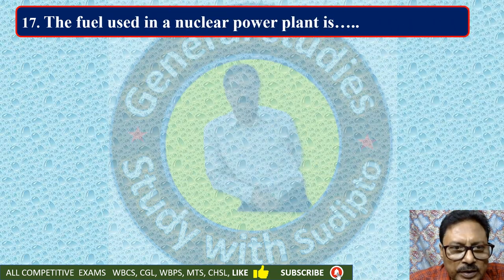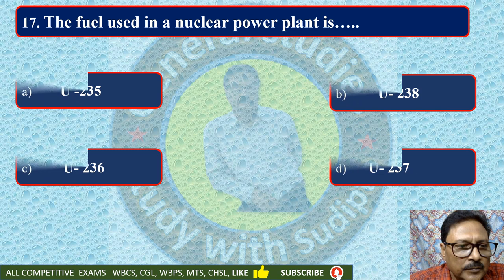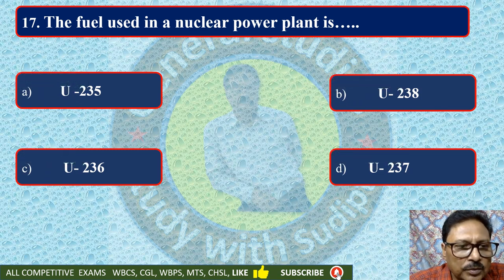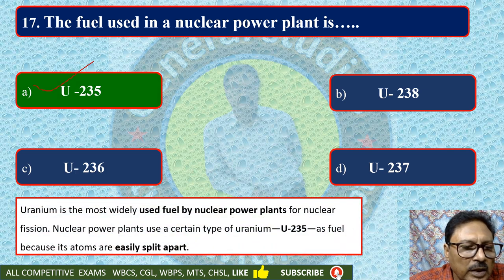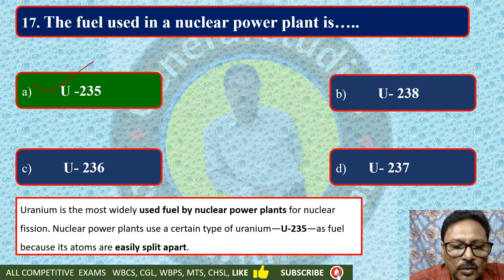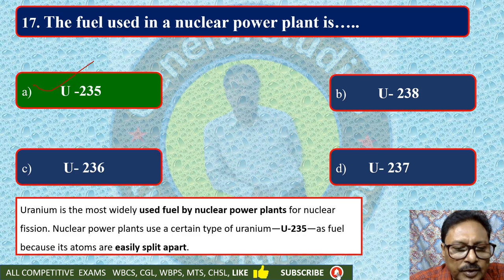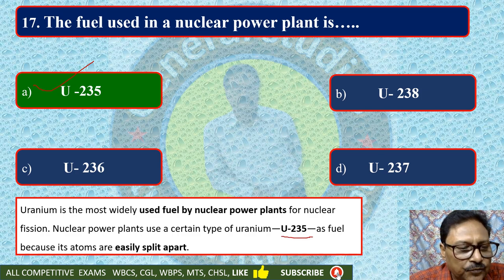The fuel used in a nuclear power plant is — uranium-235, uranium-238, uranium-236, or uranium-237. The correct option is uranium-235. Uranium is the most widely used fuel for nuclear power plants. Nuclear power plants use certain types of uranium called U-235 as fuel because these atoms are easily split apart.